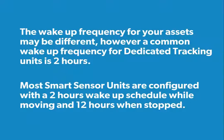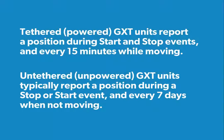The wake-up frequency for your assets may be different. However, a common wake-up frequency for dedicated tracking units is two hours. Most smart sensor units are configured with a two-hour wake-up schedule while moving and twelve hours when stopped. Tethered or powered GXT units report a position during start and stop events and every 15 minutes while moving. Untethered or unpowered GXT units typically report a position during a stop or start event and every seven days when not moving.